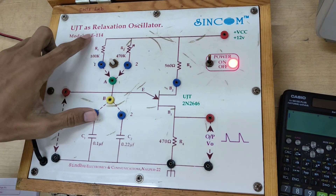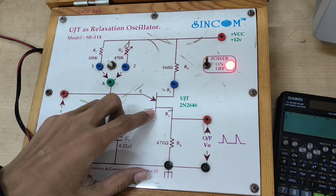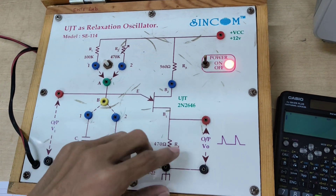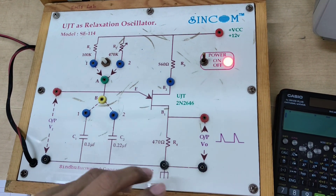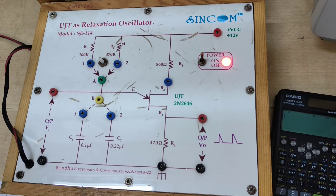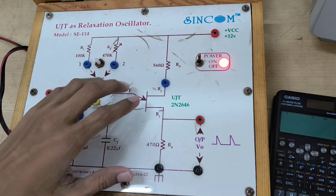The meaning of relaxation oscillator is that the circuit which produces a waveform for a specified time and then it relaxes. So how does this circuit operate?